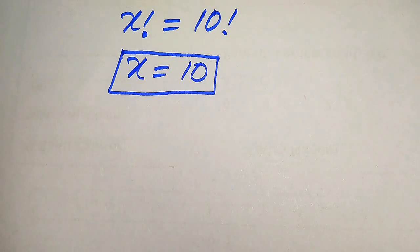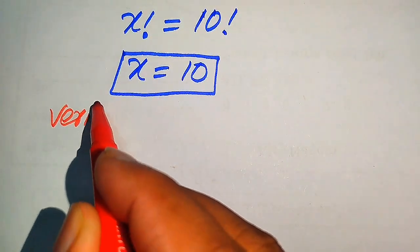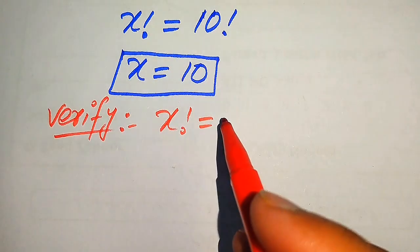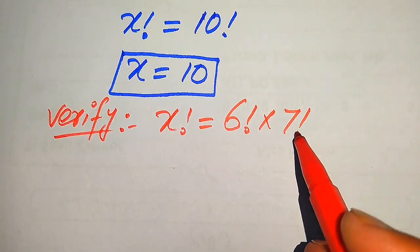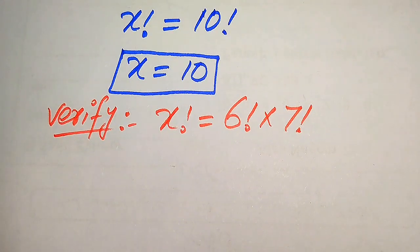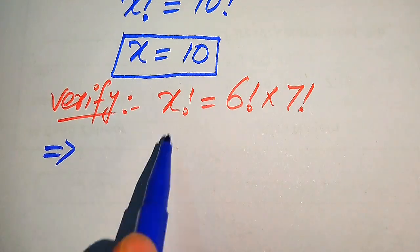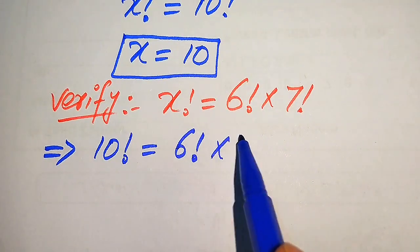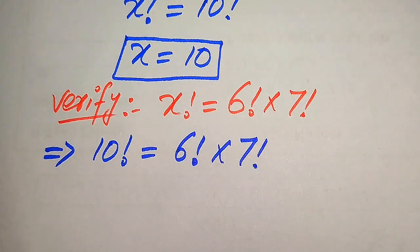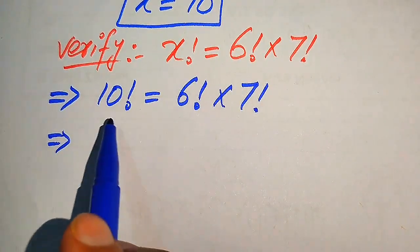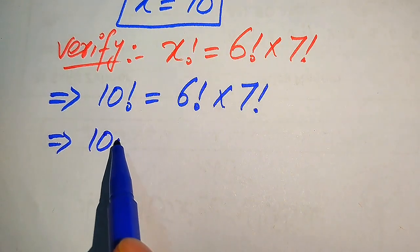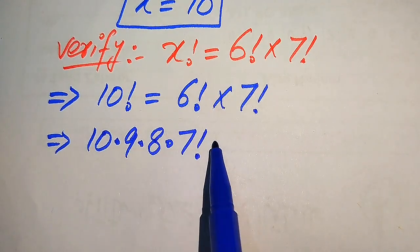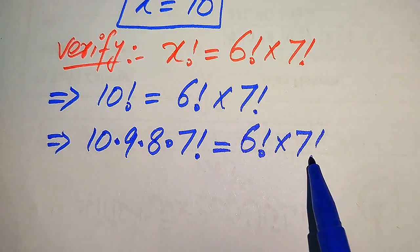Now in the next step we need to verify this value of x and check whether x equals 10 satisfies the given question statement. We copy the given statement: x factorial equals 6 factorial multiplied by 7 factorial. To verify, we break 10 factorial down to 7 factorial: it is 10 times 9 times 8 times 7 factorial, which equals 6 factorial multiplied by 7 factorial.